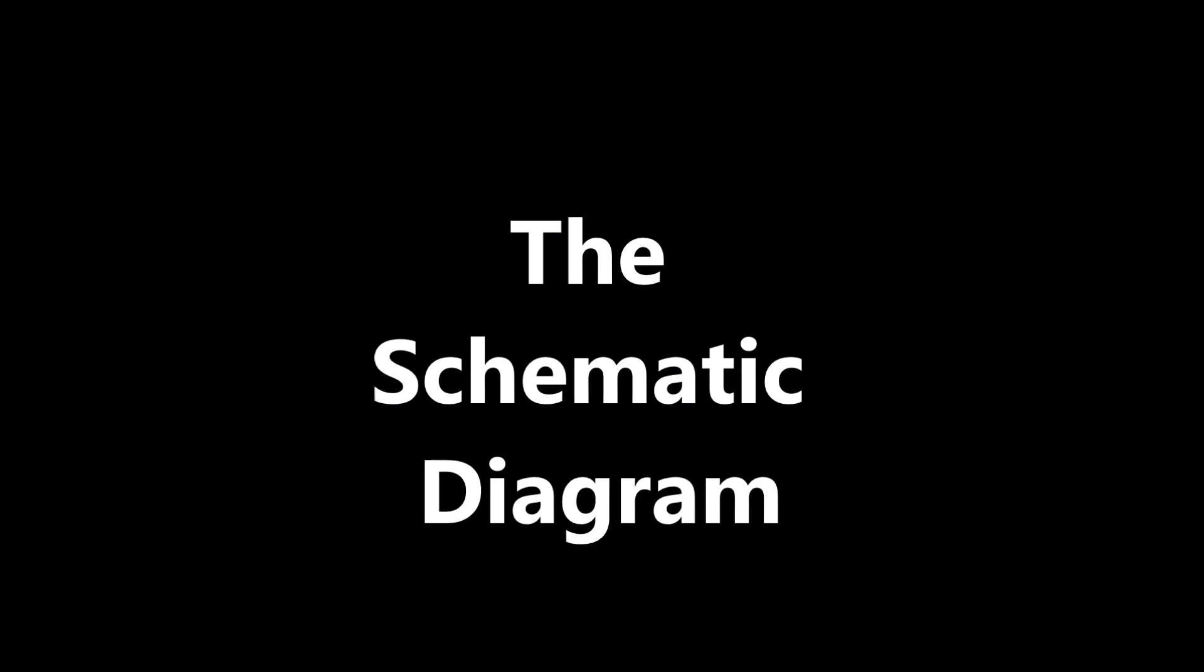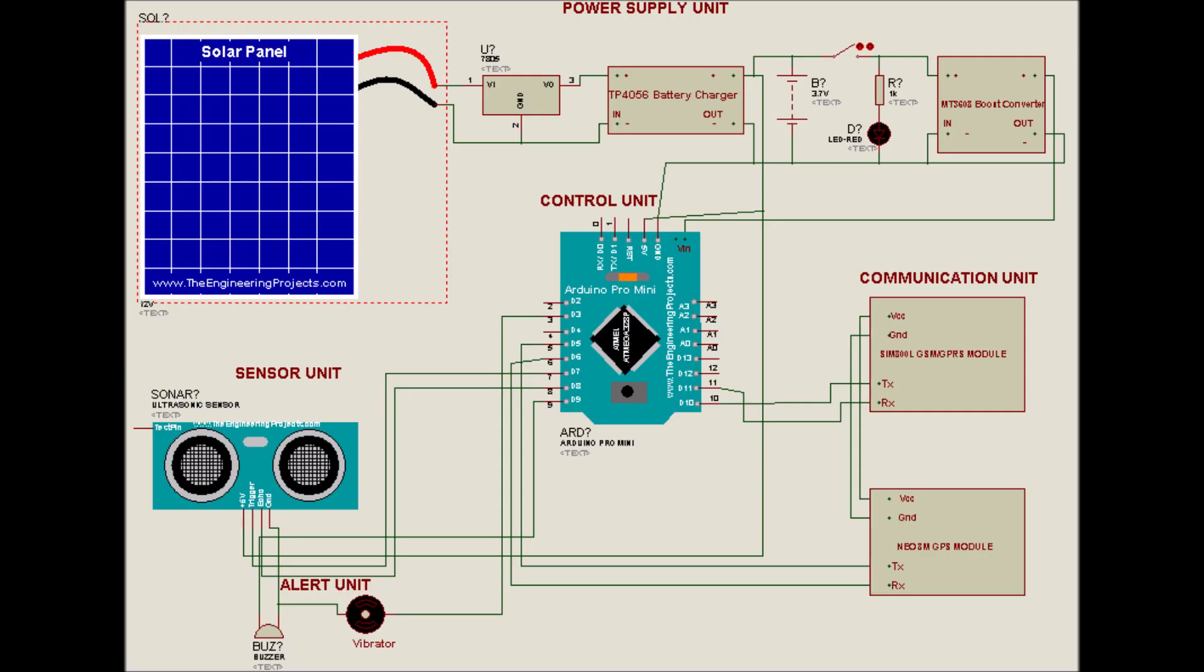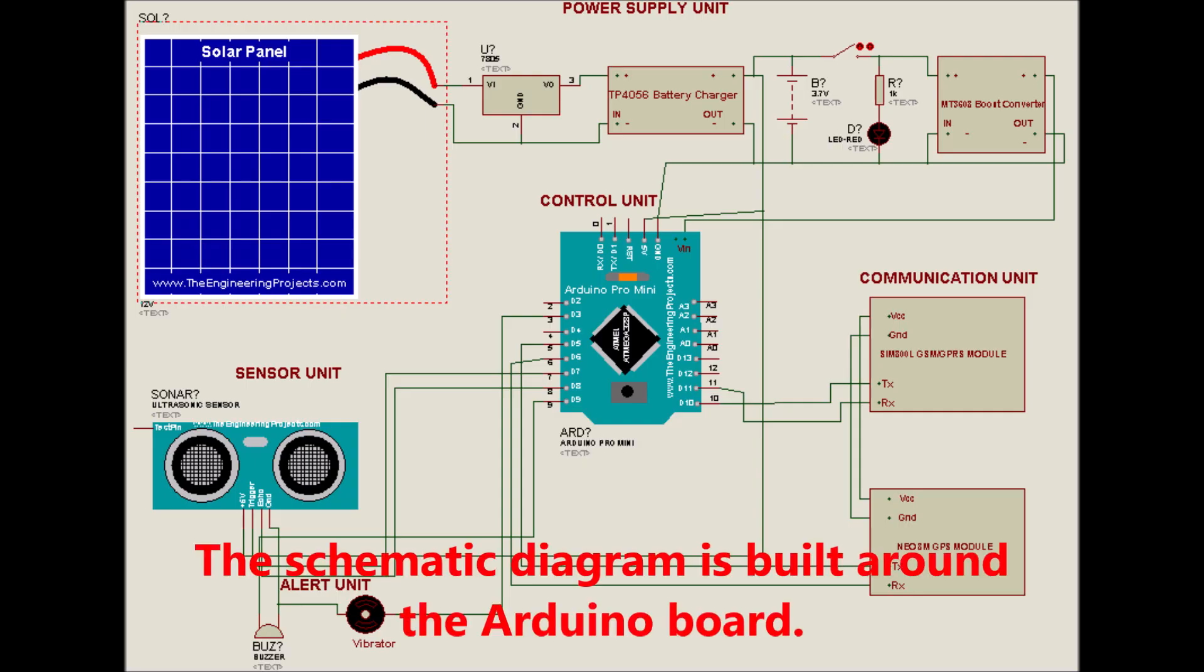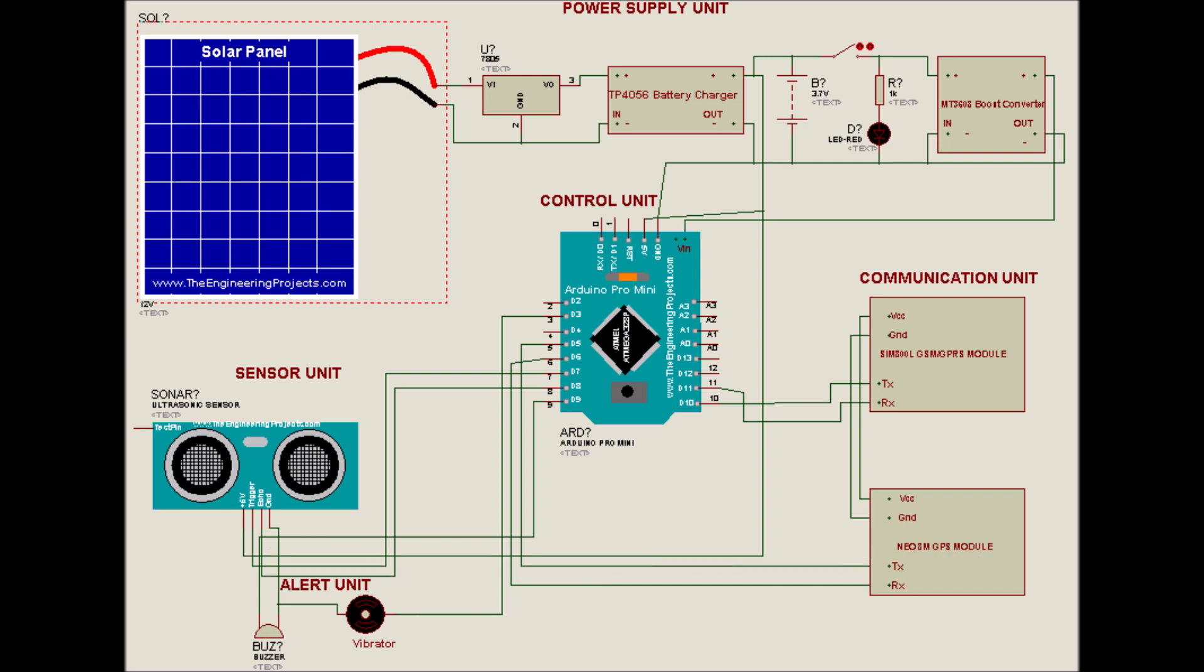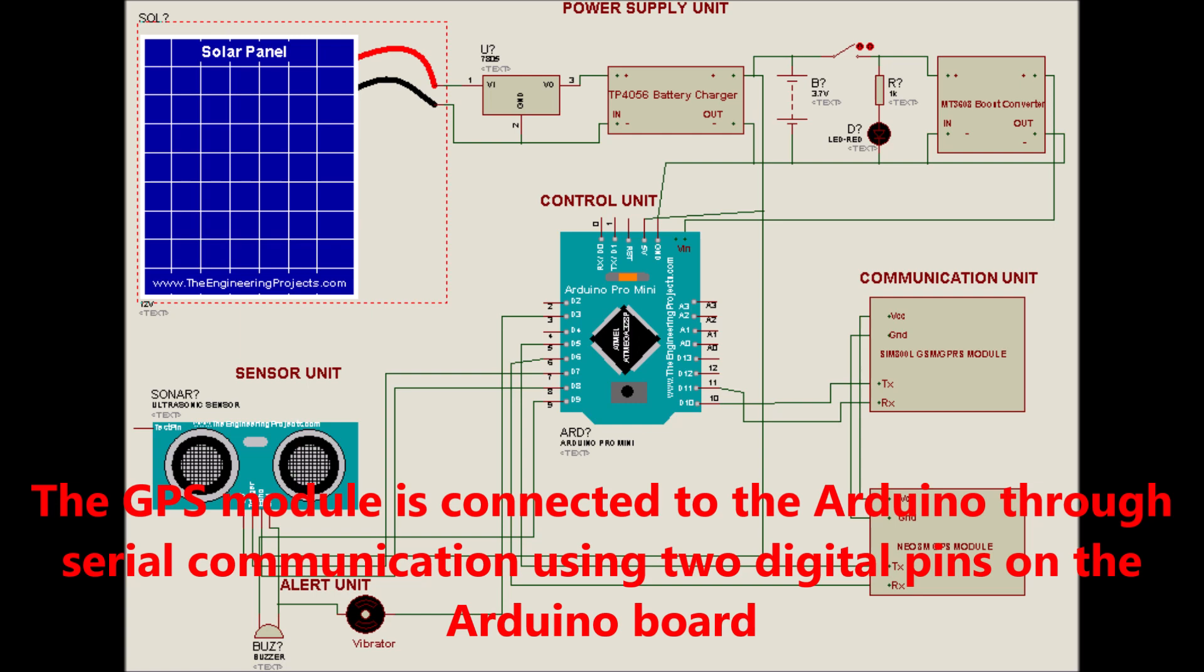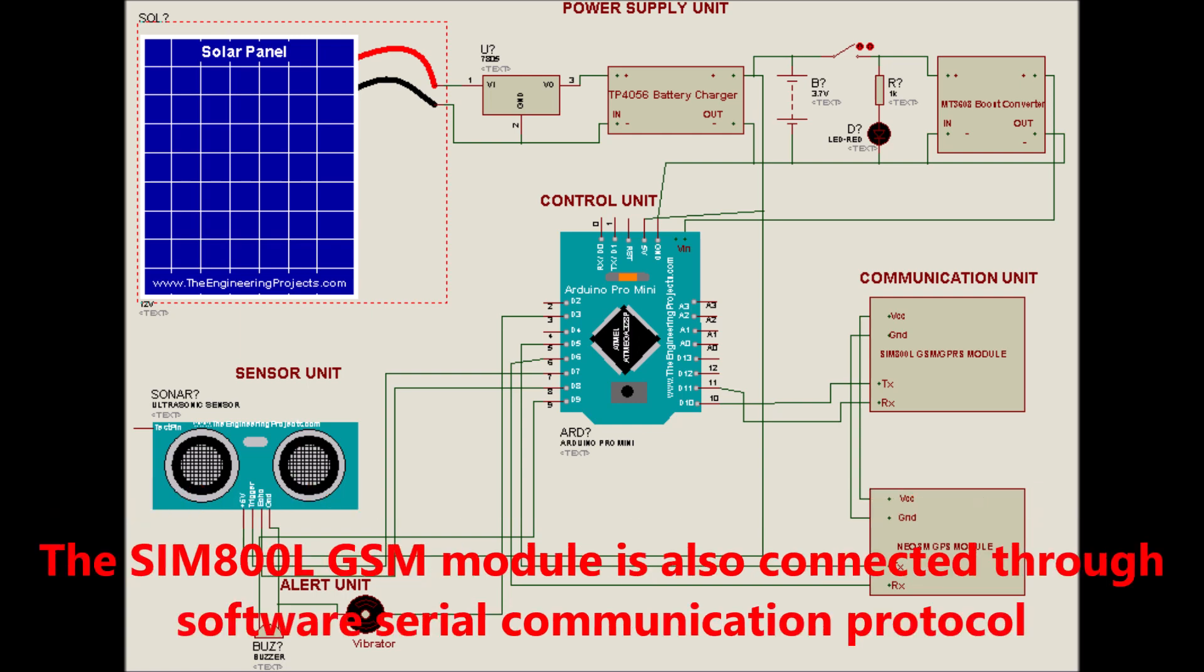Now let us talk about the schematic diagram. The schematic diagram is built with the Arduino Pro Mini Board. The schematic diagram shows the connection of the GPS module Neo6M, the GSM module SIM800L, and the ultrasonic sensor that is used to detect obstacles along the path. The SIM800L GSM module is also connected through software serial communication protocol.